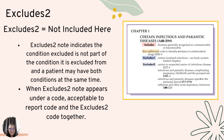Excludes two indicates the excluded condition is not part of the condition it is excluded from, and a patient may have both conditions at the same time. When an excludes two note appears under a code, it is acceptable to report that code and the excludes two code together. For example, excludes two might say 'carrier or suspected carrier of infectious diseases' and give examples. I know this is a lot of words, but when we start coding these things are going to make more sense.